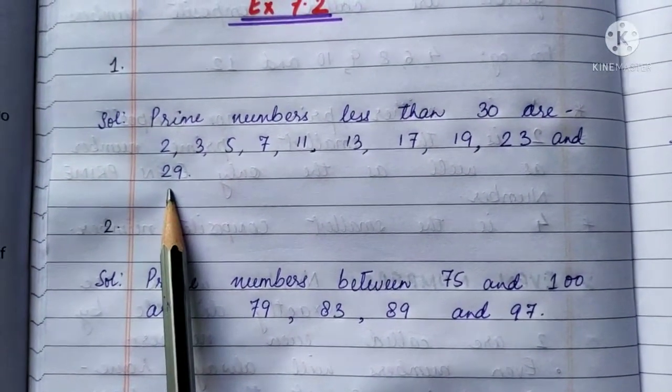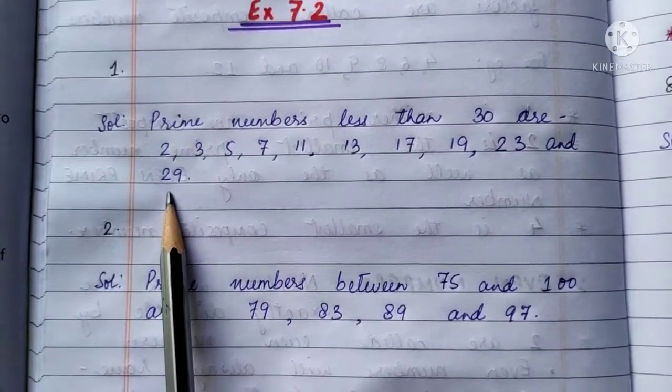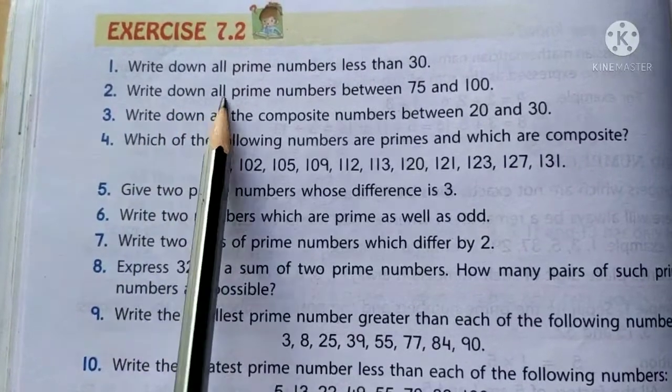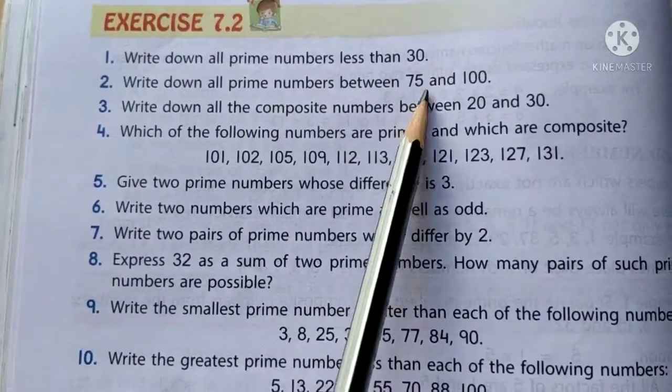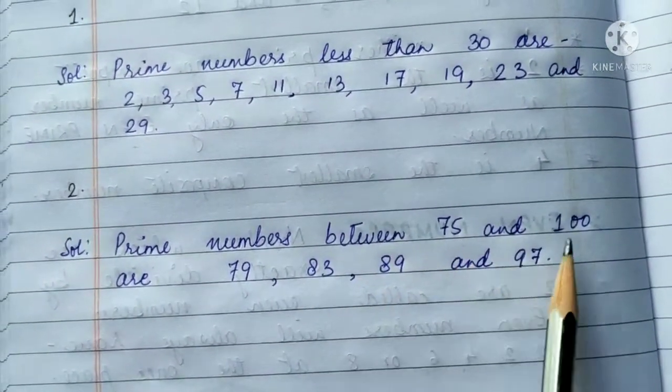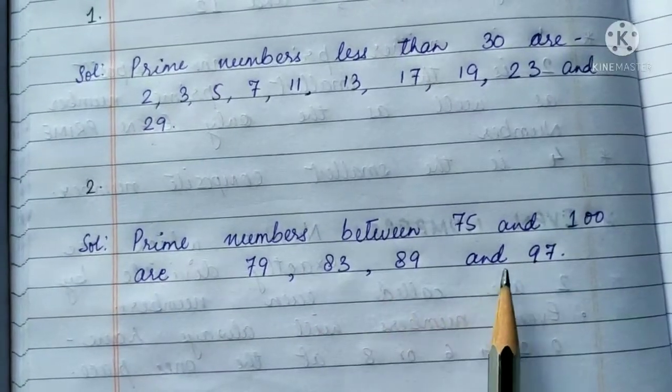Children, I hope you remember what prime numbers are. Numbers which have only two factors, 1 and the number itself. Question 2. Write down all prime numbers between 75 and 100. Prime numbers between 75 and 100 are 79, 83, 89 and 97.